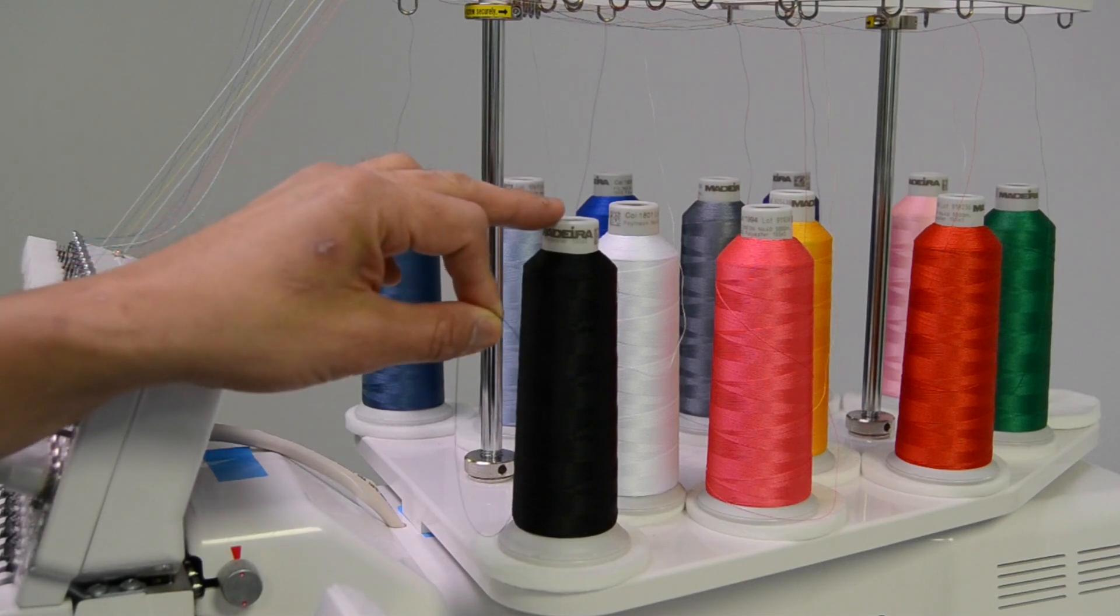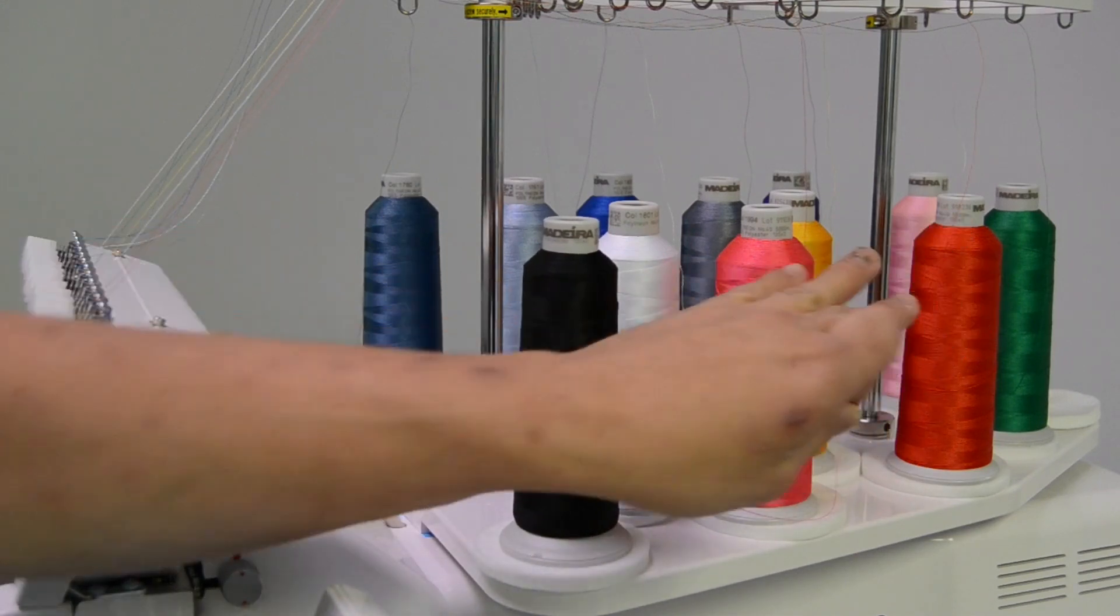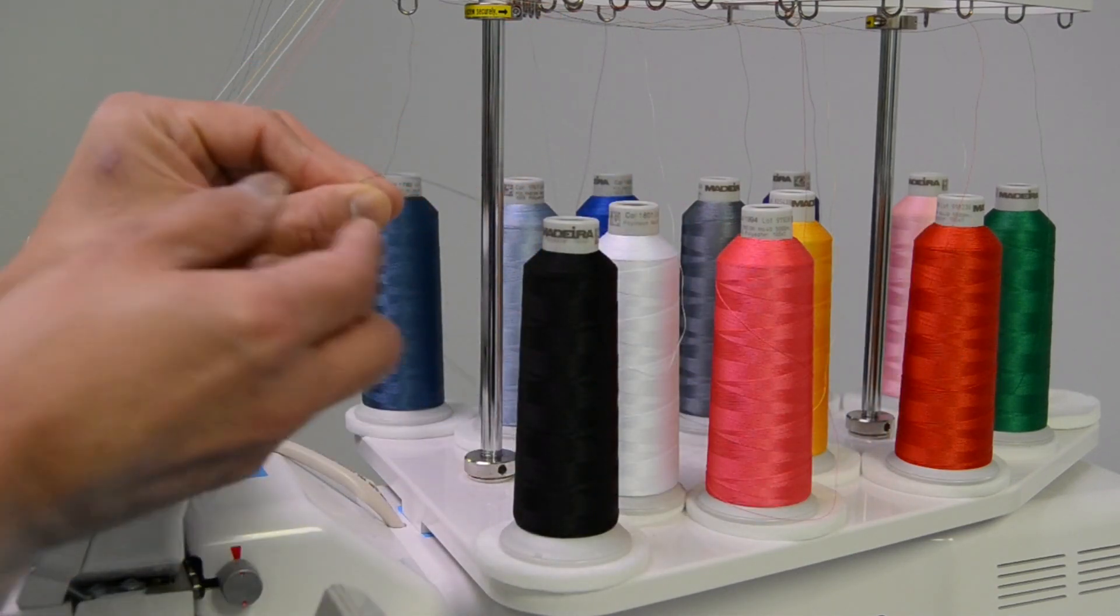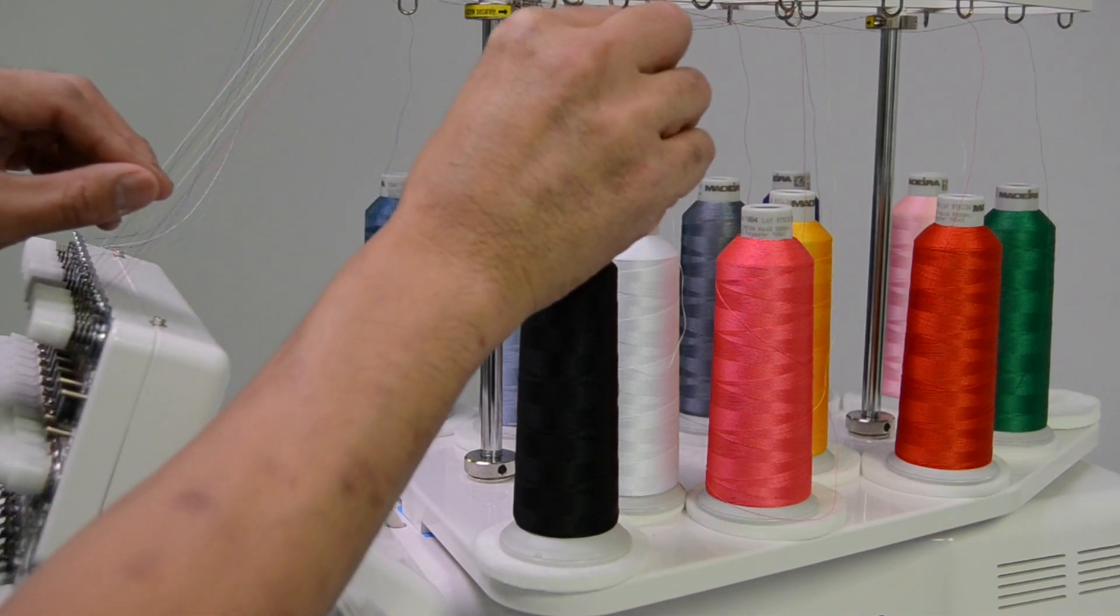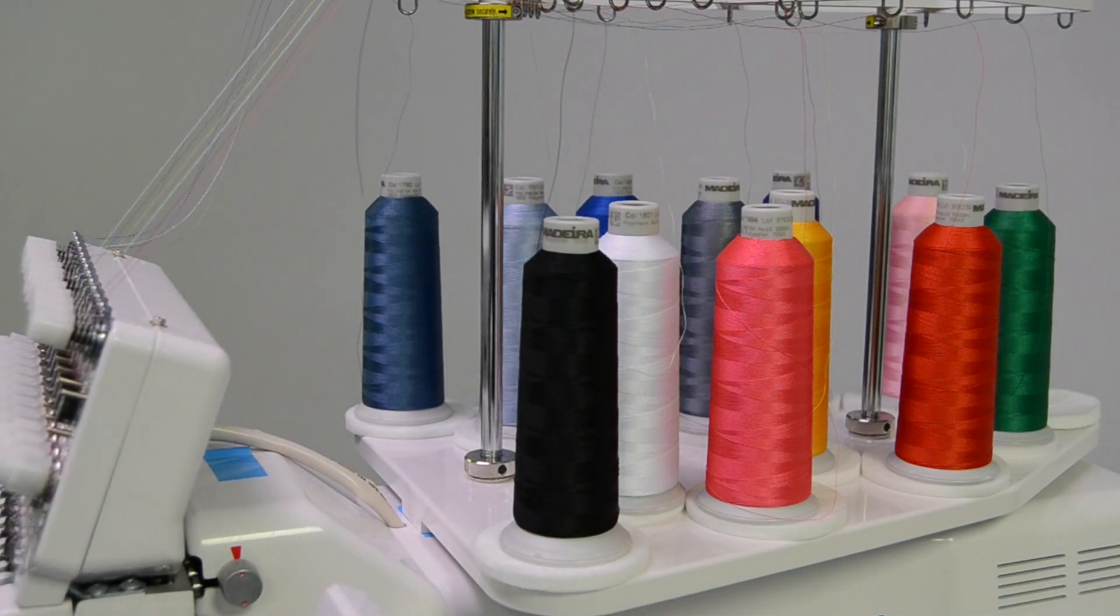From the cone find the thread guide loop directly above the cone. Each one of these cones has a loop directly above it and that's the first loop that it passes through, going from the back to the front and then forward on to the rest of the thread tree.